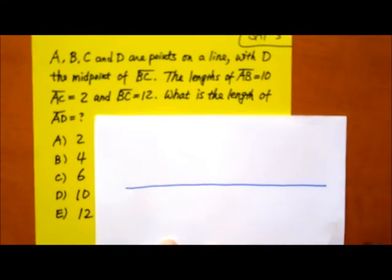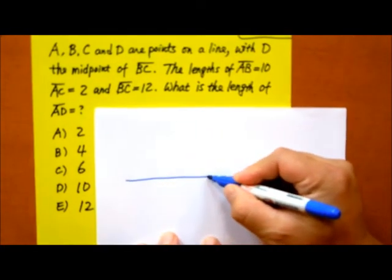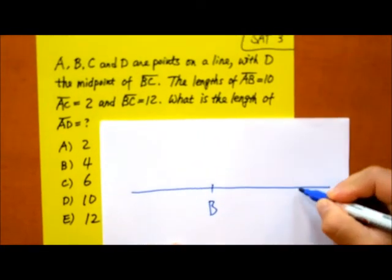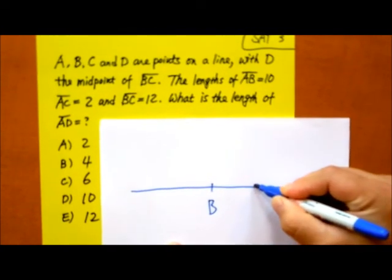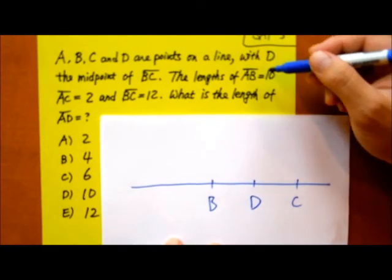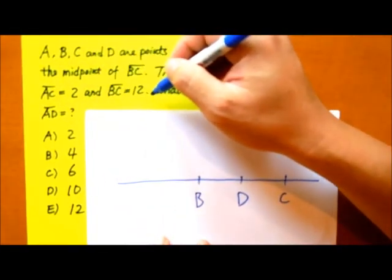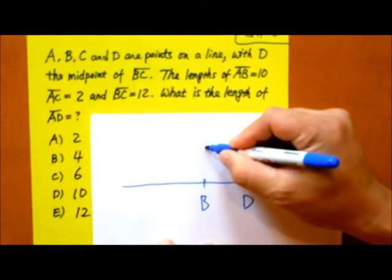Okay, so here's the line. D is the midpoint of BC. If B is here and C is here, D will be right in the middle. Now AB is 10, AC equals 2, and BC is 12. So B to C, this is